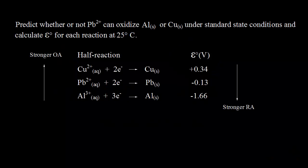Our goal is to predict whether or not Pb²⁺ can oxidize solid aluminum or solid copper under standard state conditions, and also to calculate the standard cell potentials, E°, for each reaction at 25 degrees C.